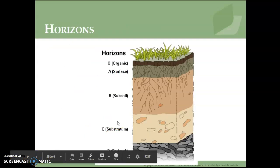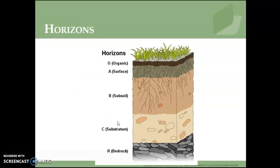As soil develops, layers begin to form. A horizon is a layer of soil distinguished by properties or characteristics developed through the five factors of soil formation. Soil horizons have crucial implications for plant growth. The fertile upper outermost layer of soil is called the topsoil, surface horizon, or A horizon.